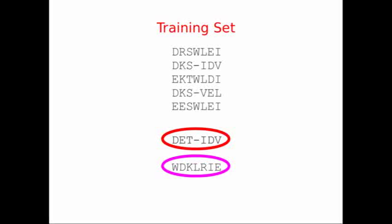On the other hand, our second sequence, WDK-LRIE, also gets an extremely bad score because the amino acids are just in the wrong order.